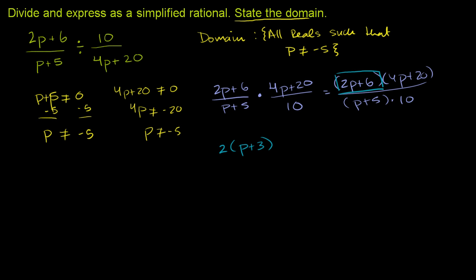And then the 4p plus 20, we can rewrite that. We can factor out a 4, so times 4, 4 times p plus 5. And then we have our p plus 5 down there in the denominator. We have this p plus 5. We can just write it down in the denominator, p plus 5.